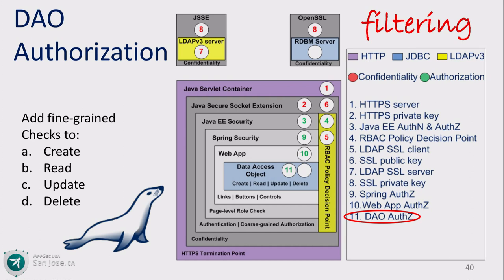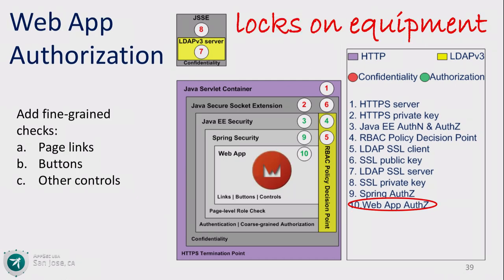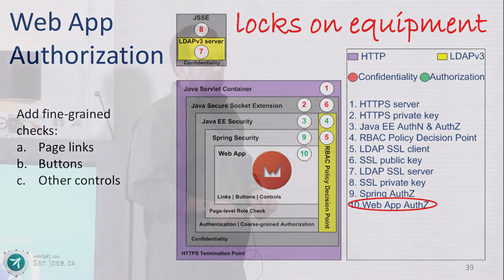You might ask: why do I have a programmatic authorization check in both the database and the web app — wouldn't one or the other suffice? Well, what if the attacker was able to bypass the web app framework like what happened at Equifax? What if they are able to instantiate your DAO component using reflection? Do you have any protection for that? That's where defense in depth comes in — one layer breaks down, the other picks up the slack.